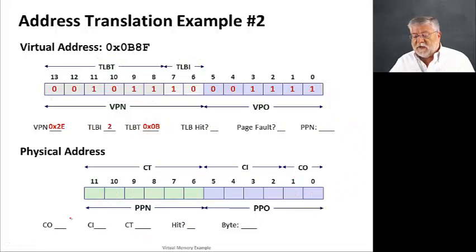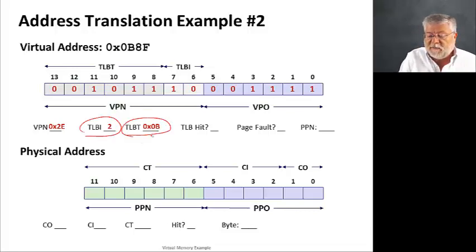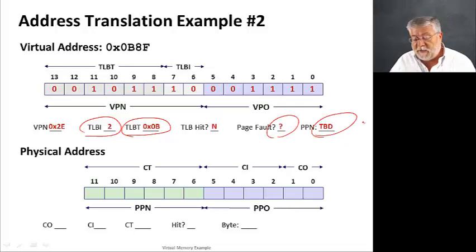All right. Let's do another example. In this case, the address 0B8F. And, you can see here we've already broken it down to our TLB index and TLB tag. And, of course, we go and look at this and it's not in the TLB. So, we have a TLB miss. And, that means that we don't know what to do at this point. We don't have our table entry, our page table entry. So, we don't even know if this page is in memory or not. Hence, the question mark here. And, we, of course, don't have any handle on a physical page number.